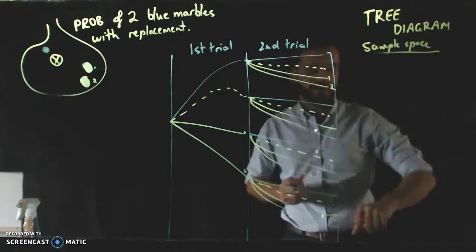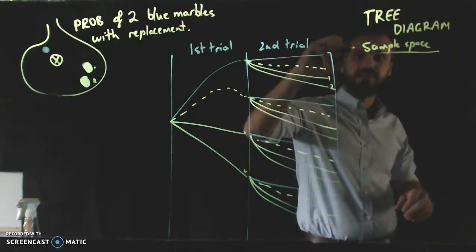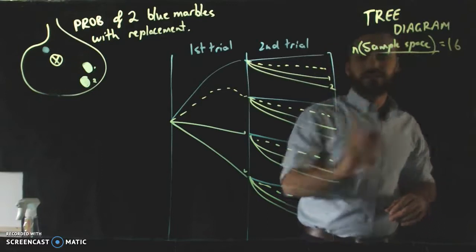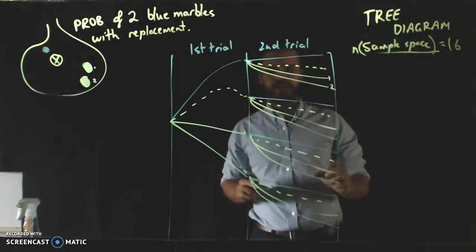12, 13, 14, 15, 16. So, our sample space size, so n of the sample space, is equal to 16. So, there's 16 possible outcomes here.